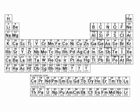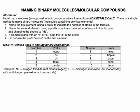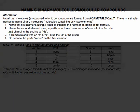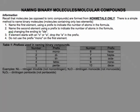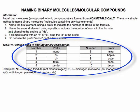You must follow some rules when you name molecular compounds. If you look at one of your pages in your workbook regarding naming binary molecules and molecular compounds, you will see this page. Name the first element using the prefix to indicate the number of atoms in the formula. Name the second element using the prefix and changing the ending to ide. If the element starts with O or A, drop the A in the prefix. Do not use the prefix mono for the first element. This is the table of the prefixes that you need to memorize.